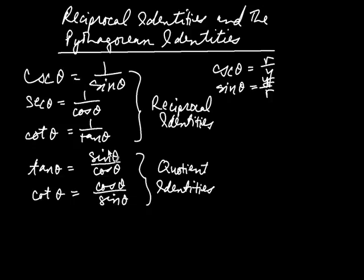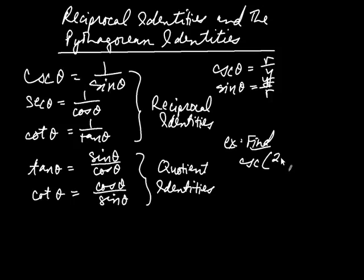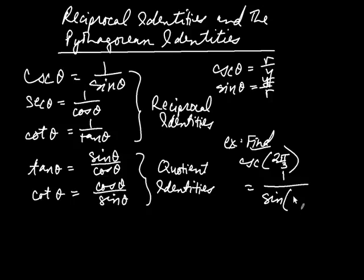All five of these identities get used fairly frequently. The reciprocal identities get used quite often. For example, let's find cosecant of 2π/3. Cosecant is pretty hard to think about directly, so we use the identity: cosecant of any angle equals 1 over sine of that angle. So this becomes 1 over sine of 2π/3.